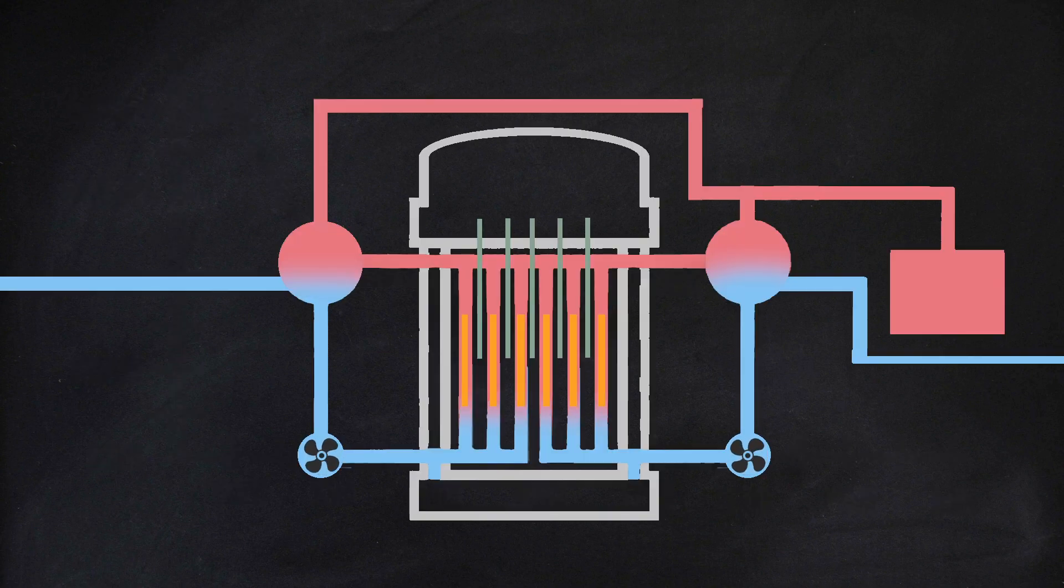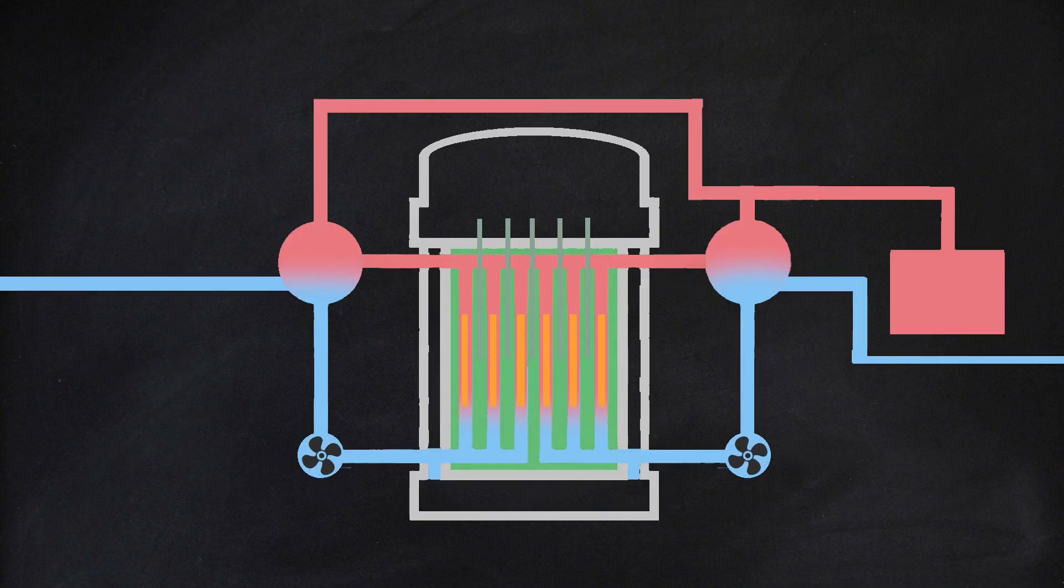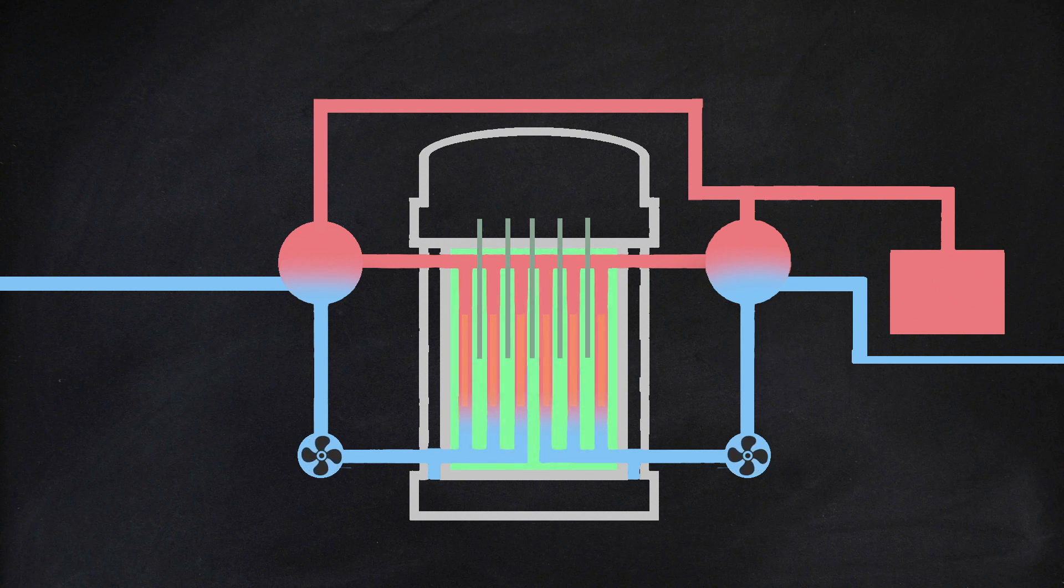On its own, xenon poisoning would not cause a catastrophe, as it merely slows down the nuclear reaction. However, it will play a role in the events that are yet to come.